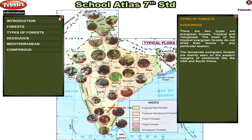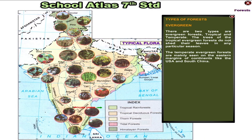Types of Forest: Evergreen. There are two types of evergreen forests: tropical and temperate. The trees of the tropical evergreen forests do not shed their leaves in any particular season. The temperate evergreen forests are mainly seen on the eastern margins of the continents like the USA and South China.